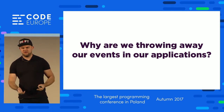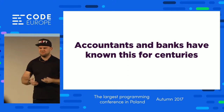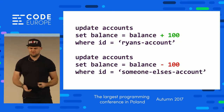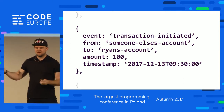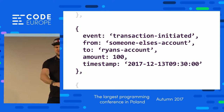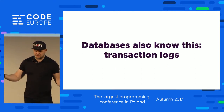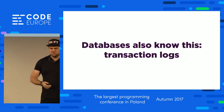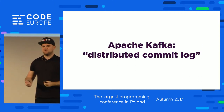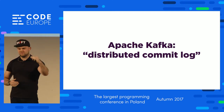Why do we throw away all these events that happen in our application? This is something accountants and banks have known for centuries, even before computers. Hopefully, if you look behind the scenes at your bank account, they're not just incrementing and decrementing numbers. They have a set of events representing transactions. Your bank statement shows you've sent money here, received money there — a log of exactly what happened. Databases have even known this: we have a transaction log that keeps a record of all commits and changes over time. Apache Kafka, an event streaming system, actually describes itself as a distributed commit log.